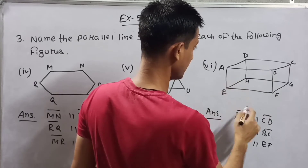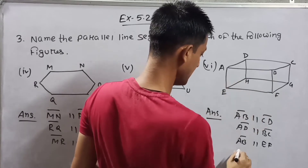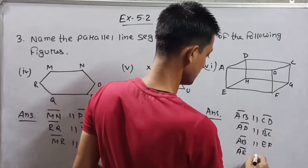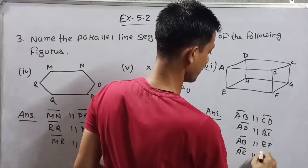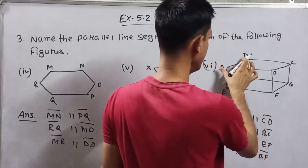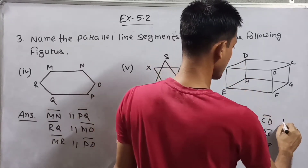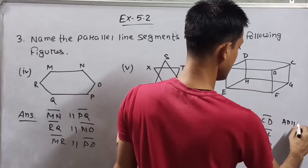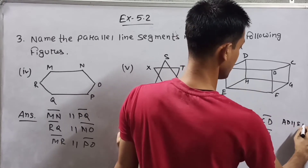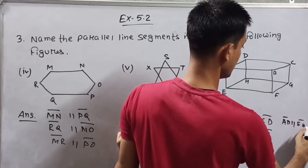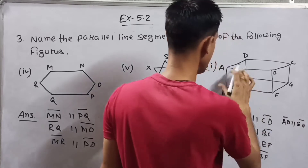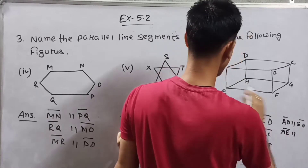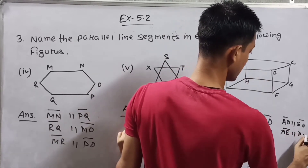Then AD is parallel to BC. From face ABFE: AB is parallel to EF, and AE is parallel to BF. From face ADHE: AD is parallel to EH, and AE is parallel to DH.